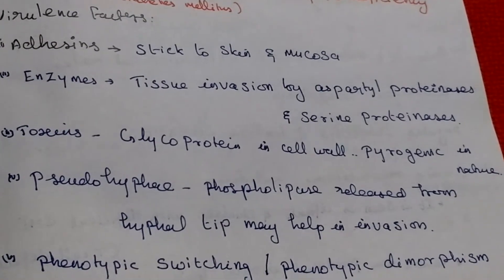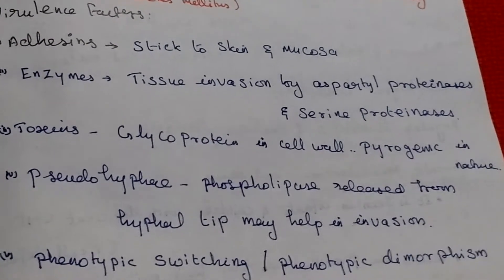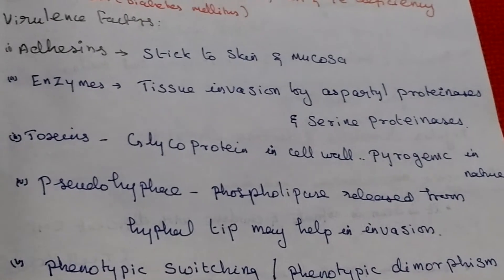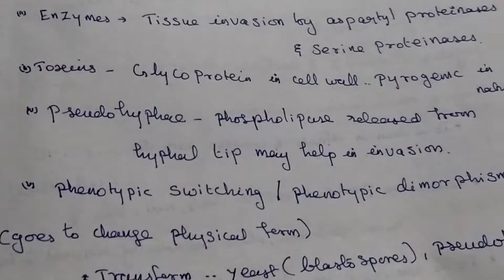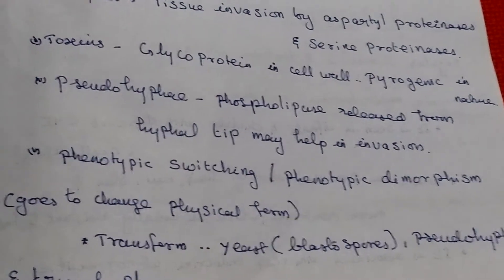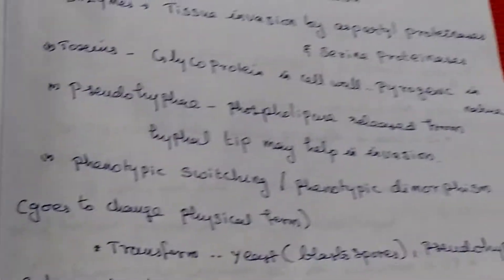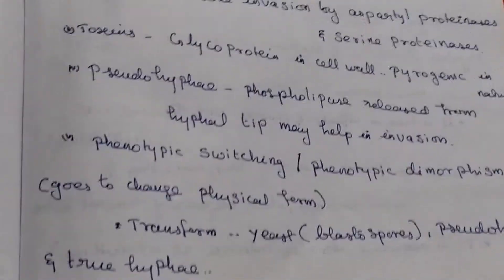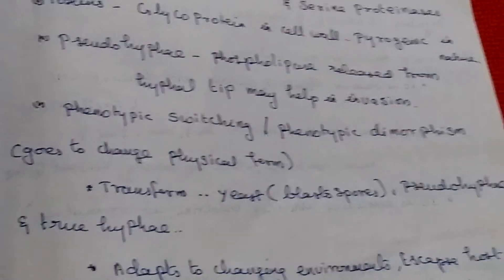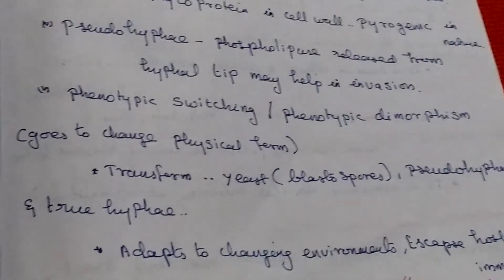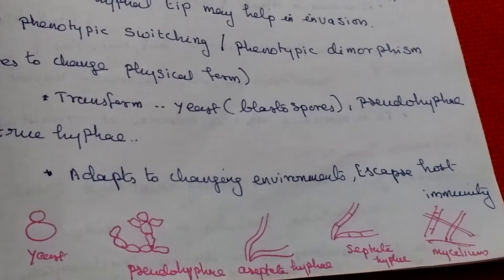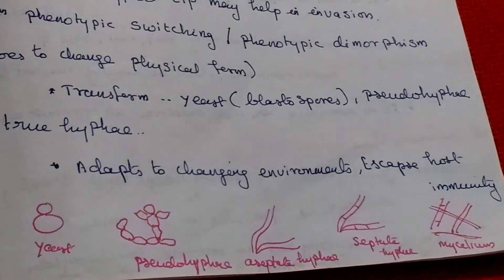Phospholipase released from the hyphal tip of pseudohyphae may help in invasion. Then phenotypic switching, or phenotypic dimorphism: the organism changes its physical form, transforming between yeast, blastospore, pseudohyphae, and true hyphae — adapting to the changing environment and escaping host immunity.